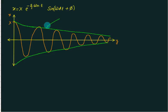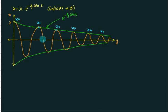This green curve represents the envelope of e to the power minus zeta omega n times t. This one is called as initial amplitude x0. It starts here, comes downward, and returns — one cycle is completed. This is x1, then x2, x3. One cycle corresponds to td, so this is td, 2td, 3td, 4td, 5td — representing the number of cycles completed.